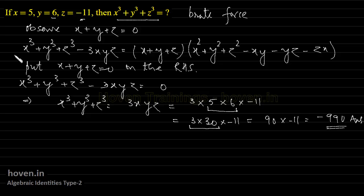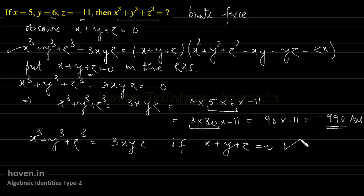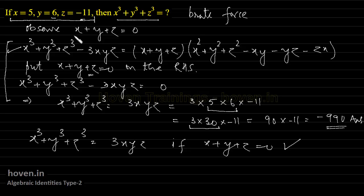I did a derivation starting with the identity and then substituted. But many people already remember the identity directly: x cube plus y cube plus z cube equals 3xyz, if x plus y plus z is 0. If you remember it this way, it becomes a two-second answer. The central point is that you have to observe what is given, look for relationships, and accordingly use an identity to obtain your answer.